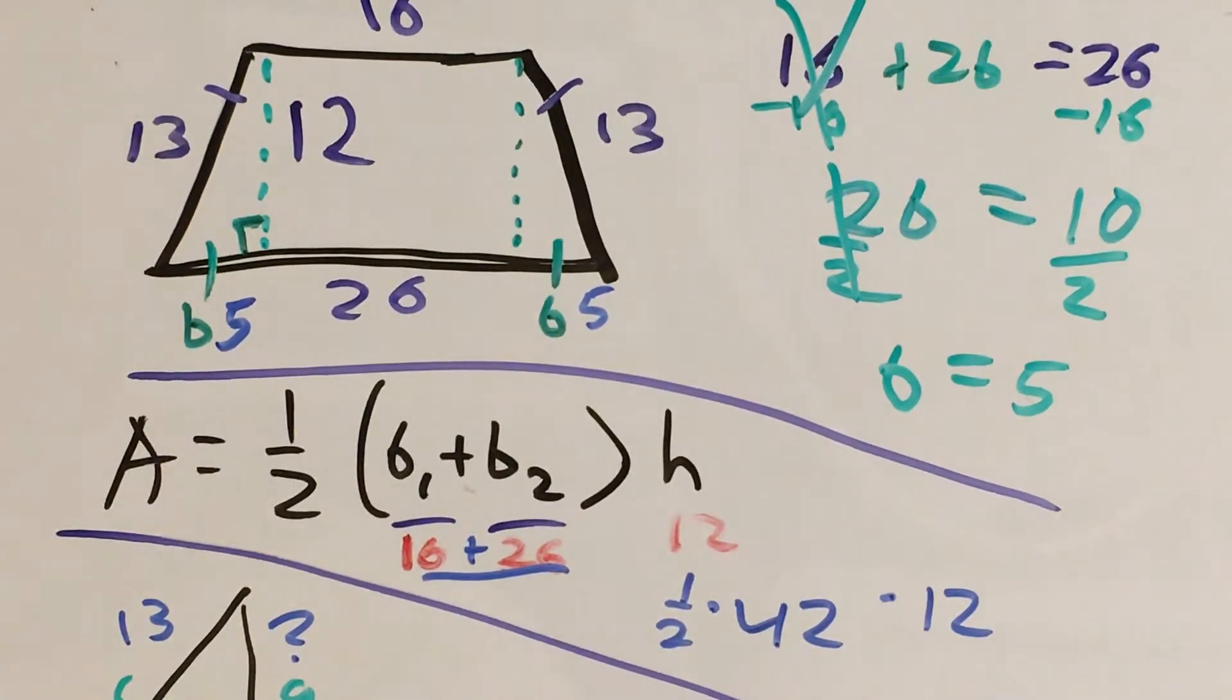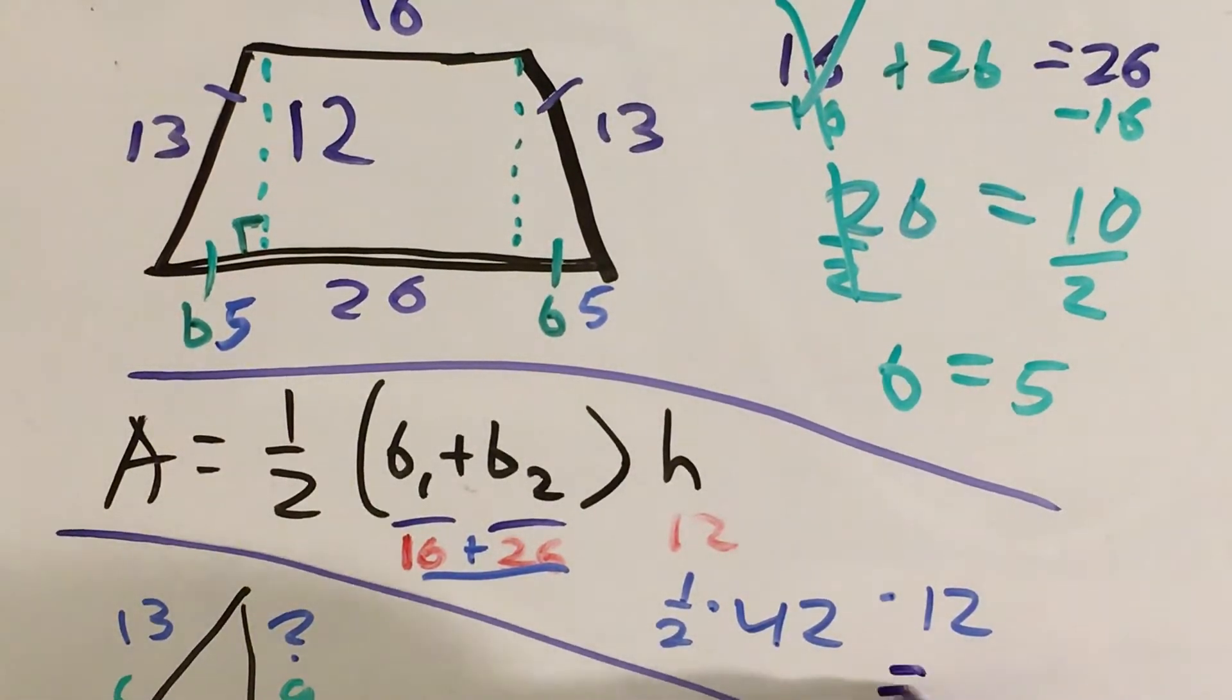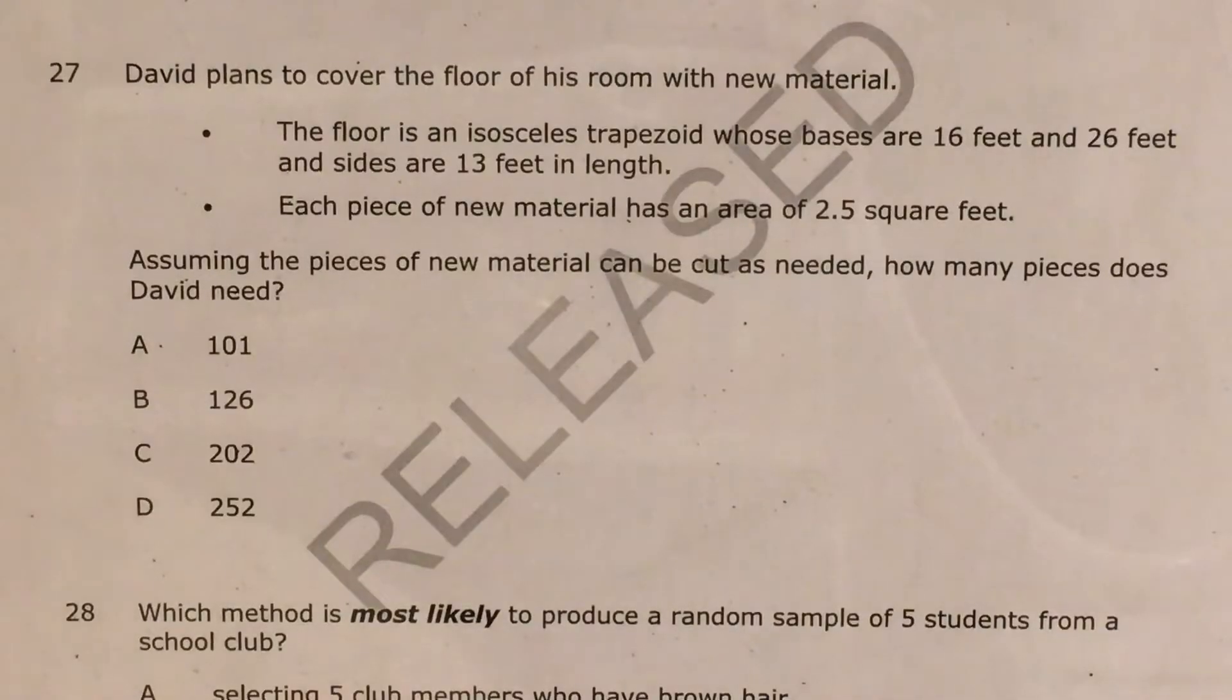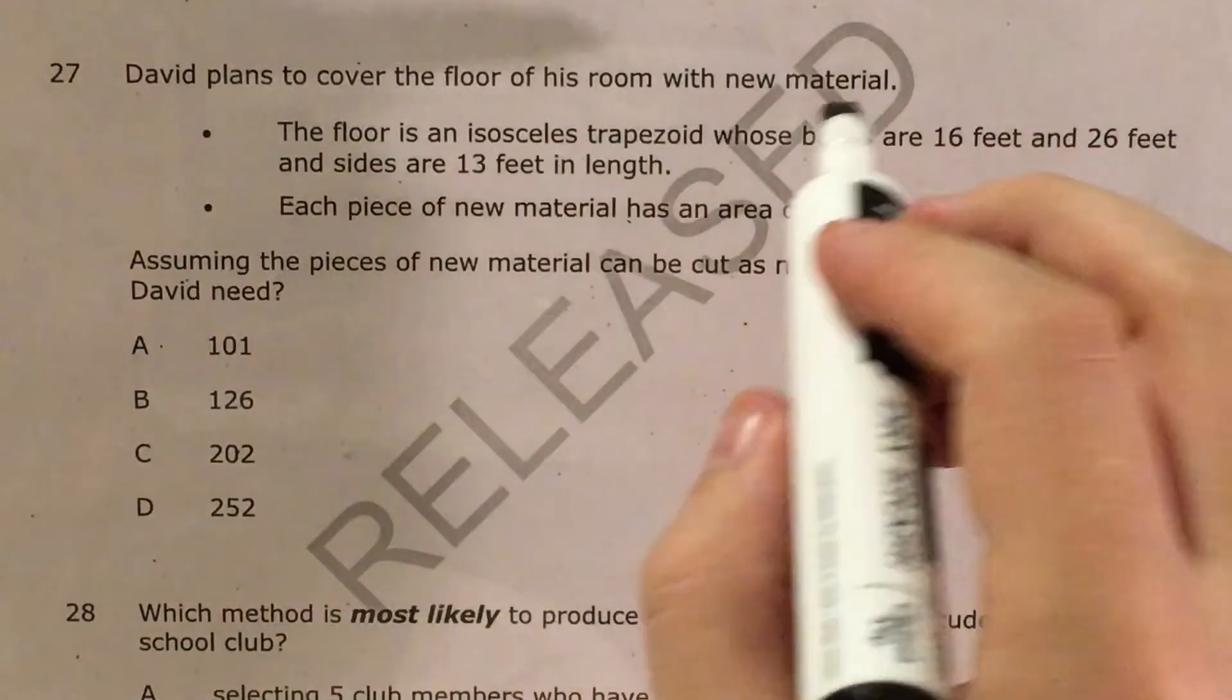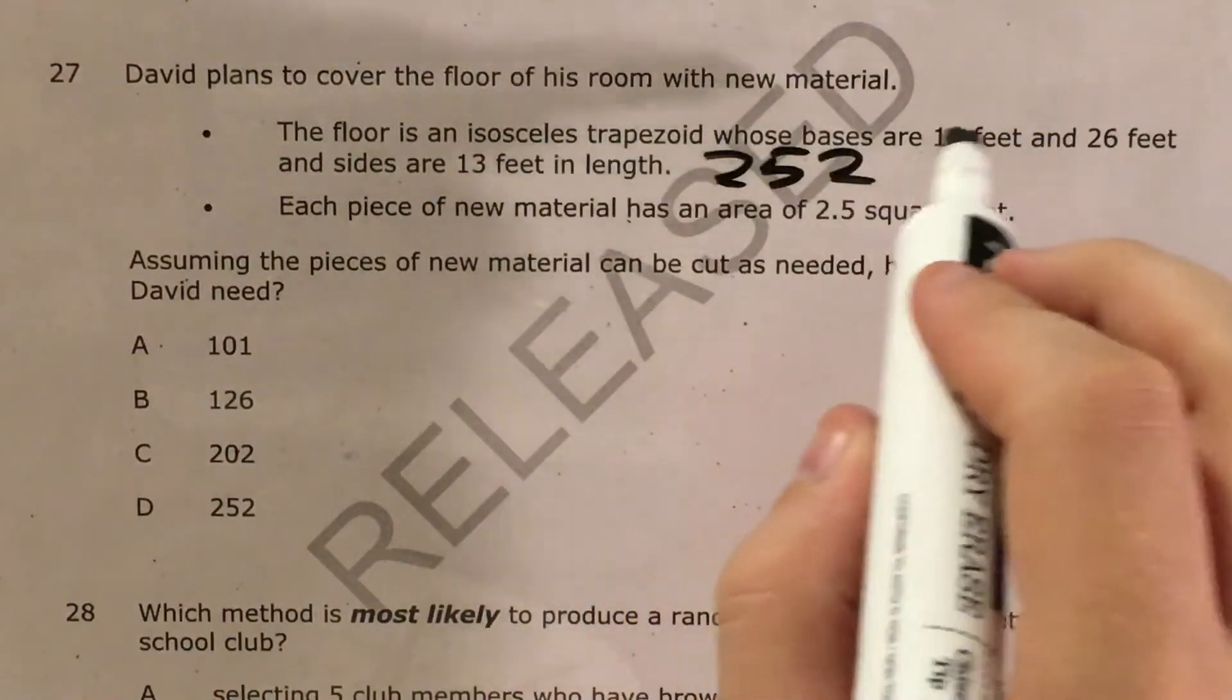But I'm not done yet. Because even though I know that my area of this trapezoid is 252, that's not the question I was being asked. So I'm going to go back to my original question. So here's my original question.